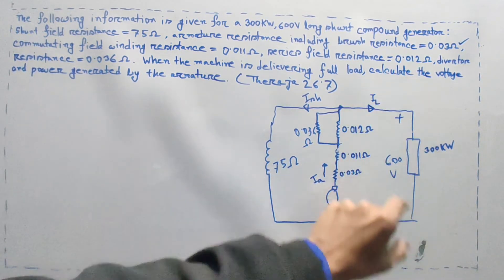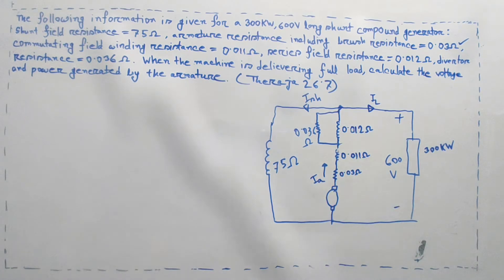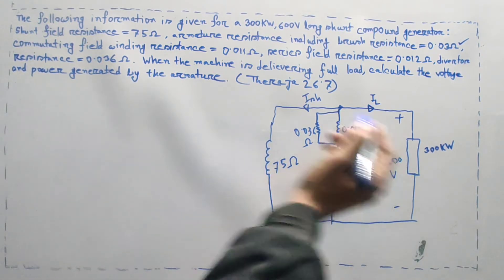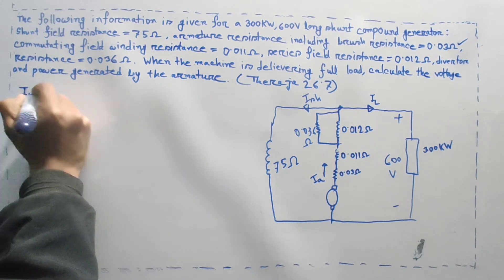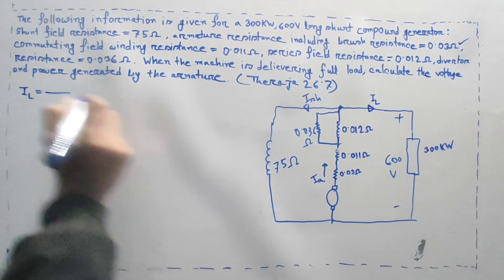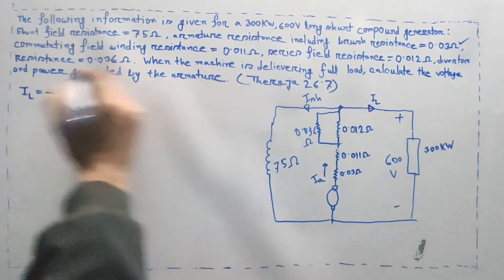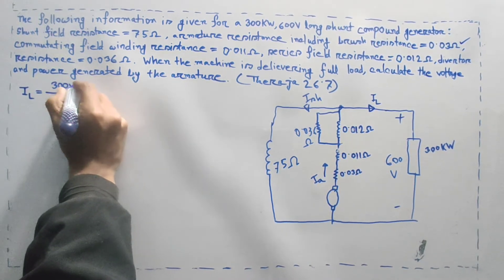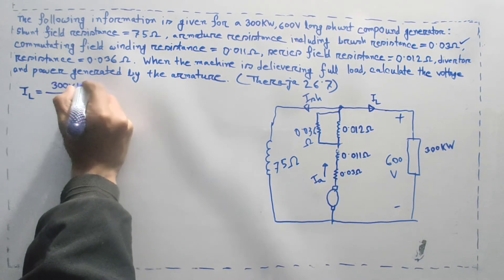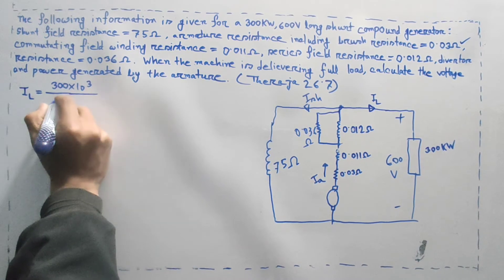So, the power gives us voltage and current, which is DC. The power is P equals VI. I will be equal to P divided by V. P equals 300 kilowatt, so I equals 300 into 10 to the power 3 divided by voltage.